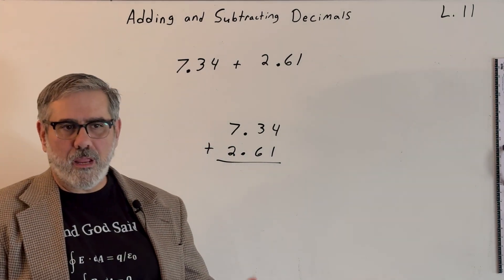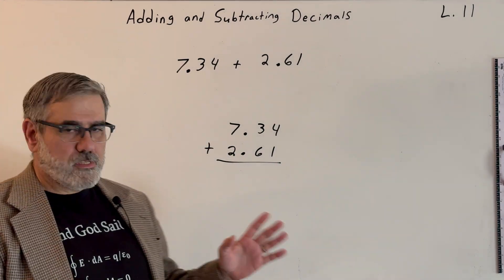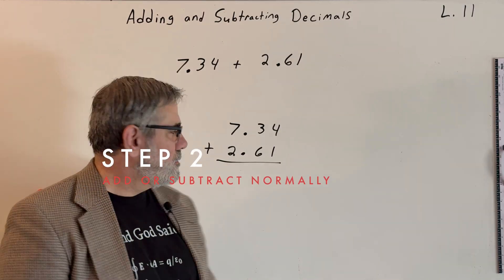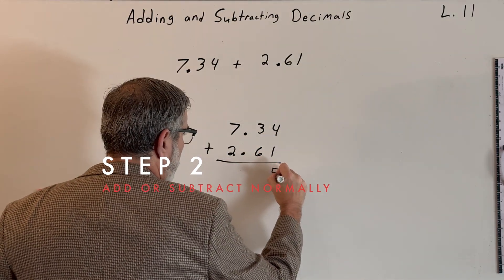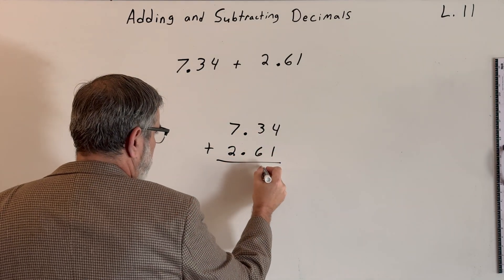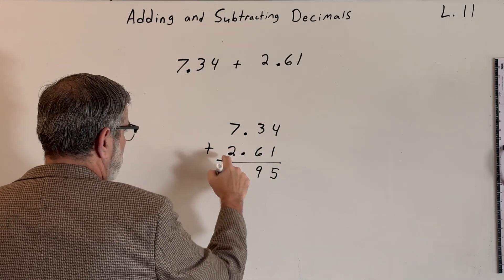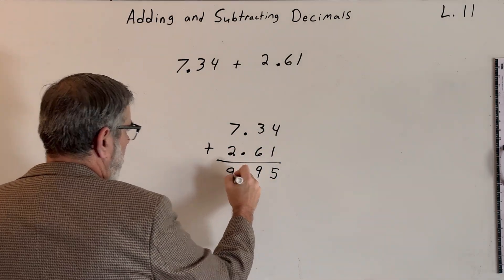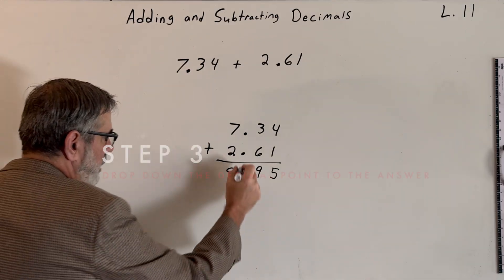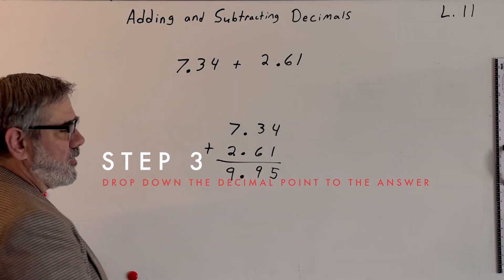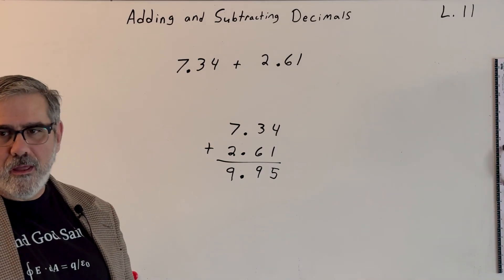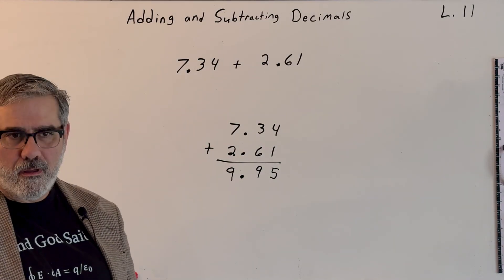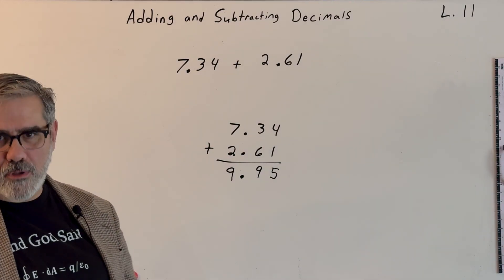Now from going forward from here, it's basically the same as it always was when adding numbers. What do I mean by that? Well, we'll add 4 plus 1 gives us 5. 6 plus 3 gives us 9. And 7 plus 2 gives us 9. And the decimal point will be directly below where it was in the problem. So the solution and the problem have the decimal points all lined up. If you do that, then you're going to be good. So let me give you one to try.